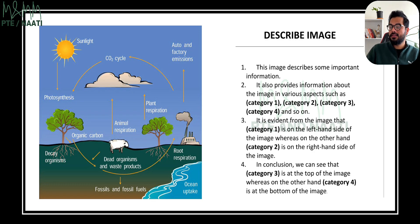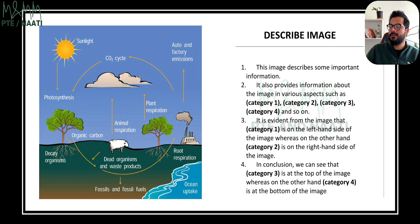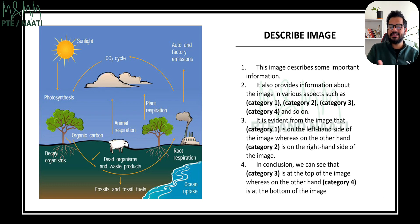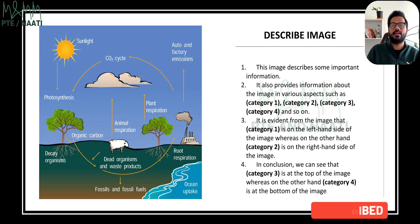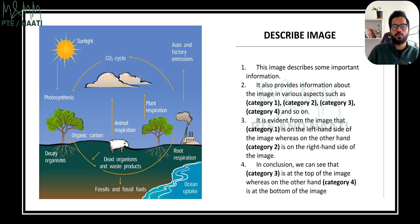For the third sentence, you can repeat the categories — that's absolutely fine. To keep it simple, I'll say the same words again: 'It is evident from the image that blue is on the left hand side of the image, whereas on the other hand, green is on the right hand side of the image.' Now, there may not actually be blue on the left or green on the right in the image, but as I said, the computer is not bothered about the content — it just wants to see how fluently you speak and how well you pronounce the words.